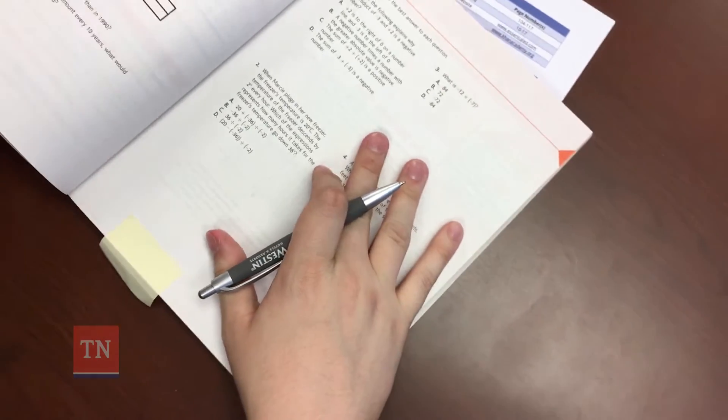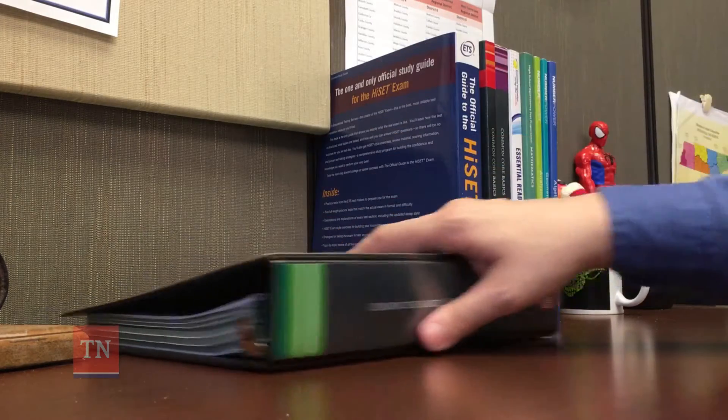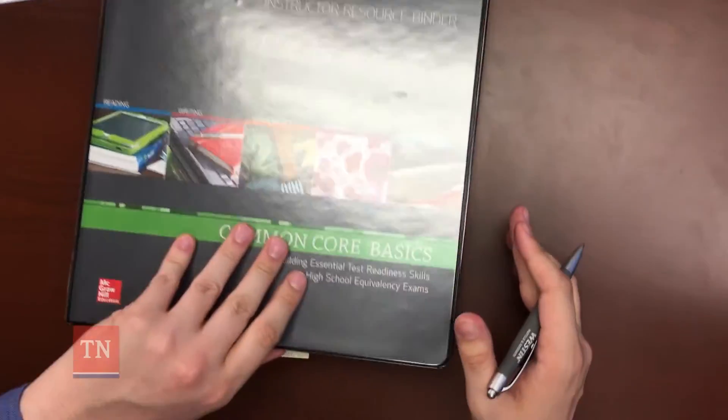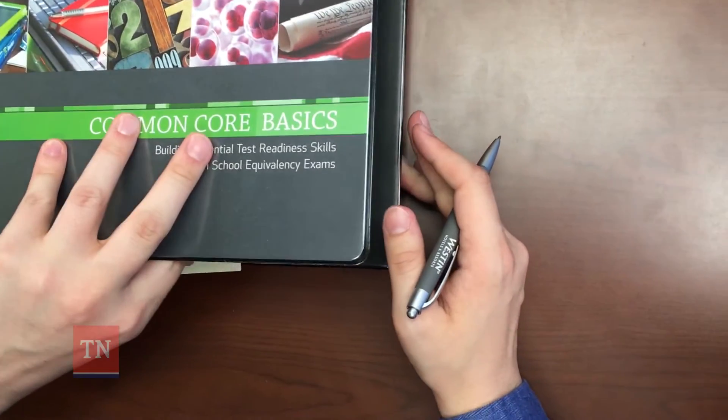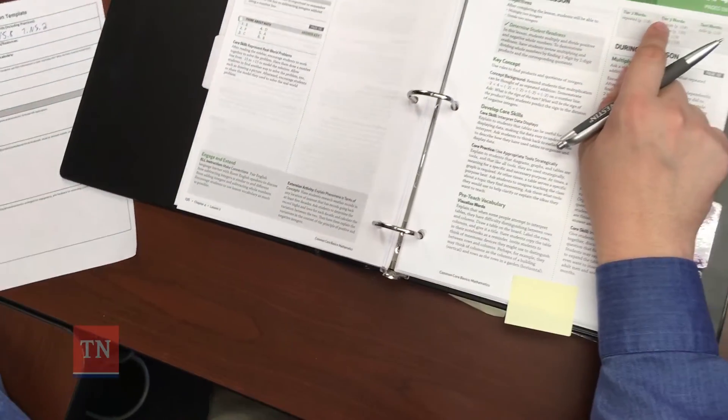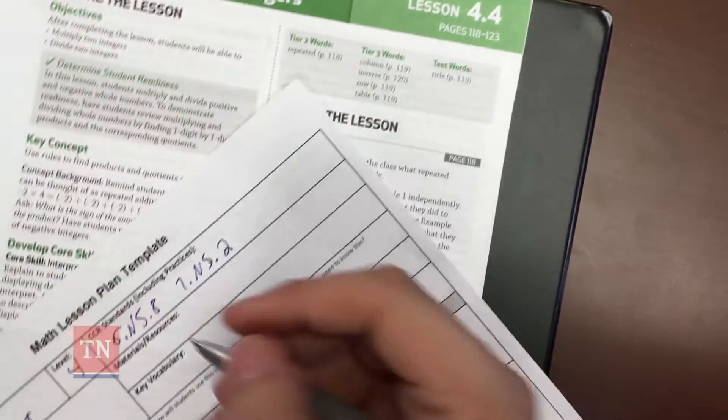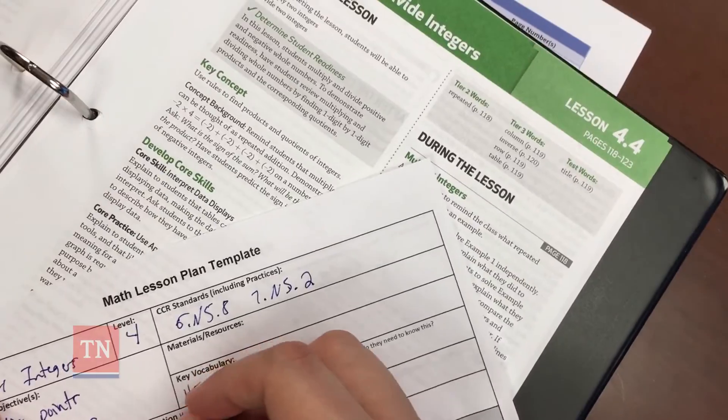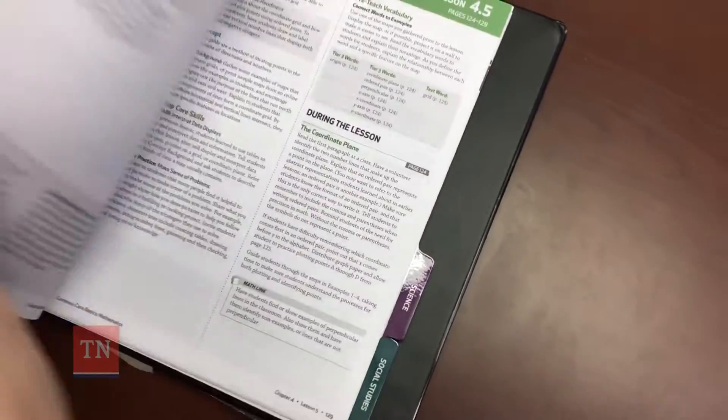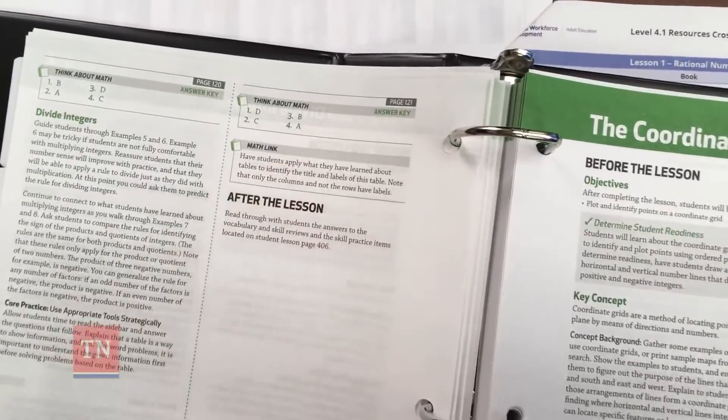Another great thing about HSE Basics is that it has lesson plans provided in the Instructor Resource Binder. I'm going to take a quick look at the lesson plan provided in the binder that corresponds to the lesson I am about to teach. From this lesson, I think that I will borrow the vocab right here, make a quick note of that in my lesson plan template. I also really like the math link piece right here, so I'm also going to make a note of that in my lesson plan template.